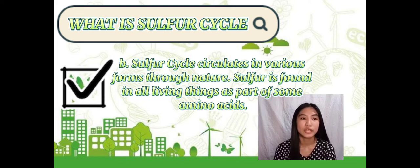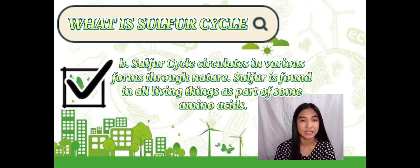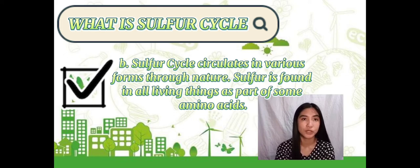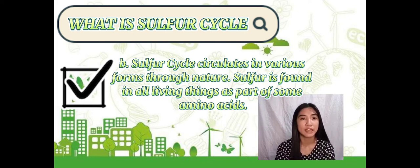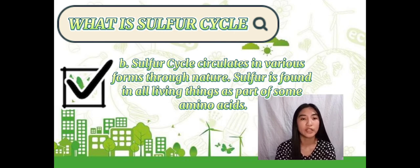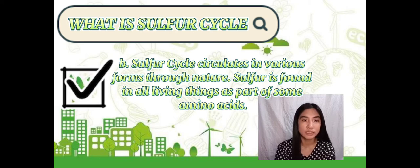Sulfur is released from rocks through weathering and then consumed by bacteria and plants. Then it is transmitted up the food chain where it is consumed by plants and animals before being released. Also, this cycle is made up of multiple cycles or multiple systems that work together to allow sulfur to travel through several reservoirs such as the atmosphere and the biosphere.